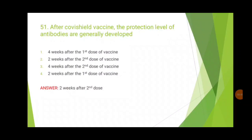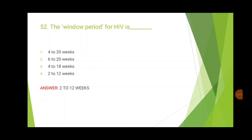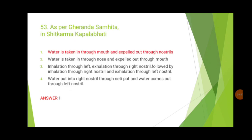From 2020 to 2022, COVID-related questions gained importance, so have an idea about vaccines, recent developments, and studies in both Ayurveda and modern medicine regarding COVID. After the COVID vaccine, the protection level of antibodies is generally developed two weeks after the second dose. Know the different vaccine types, dosing schedules, sites, and possible complications. The HIV window period, incubation periods of important diseases — the answer is 2 to 12 weeks.